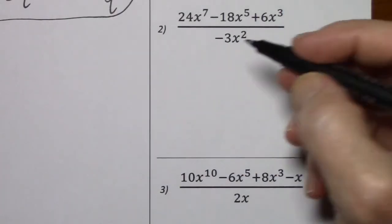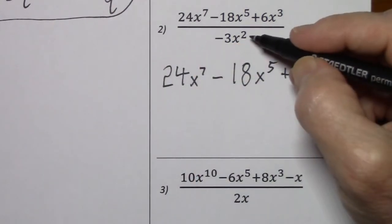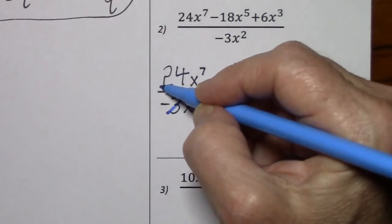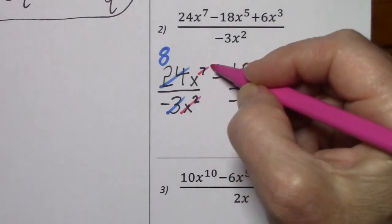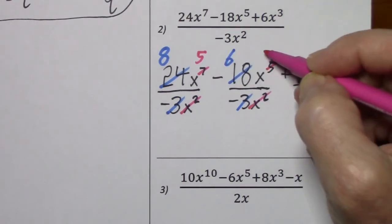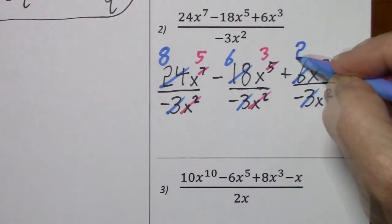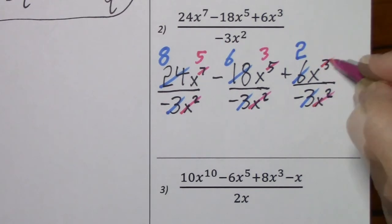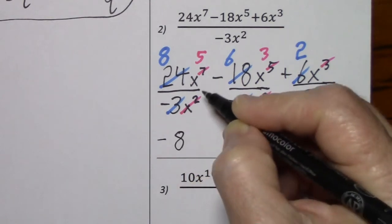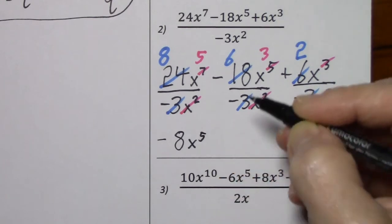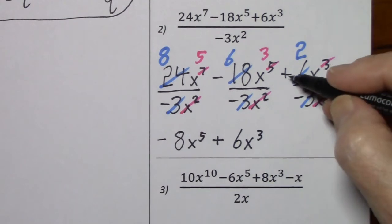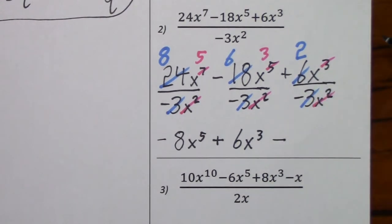Looking at number 2: rewrite the numerator and put negative 3x squared in each denominator, then simplify each fraction. Divide by 3, divide by 3. Cancel out x squared, subtract 2. Divide by 3, divide by 3. Cancel out x squared, subtract 2. So what's left standing: negative 8x to the 5th — because that's positive divided by a negative. Here's a negative divided by a negative: positive 6x to the 3rd. And positive divided by negative: negative 2x.